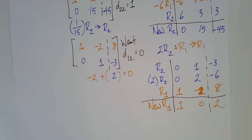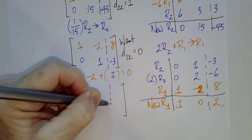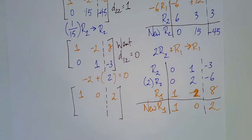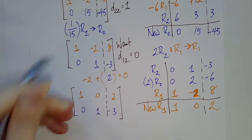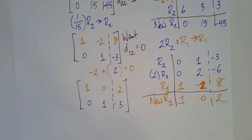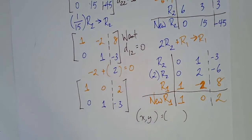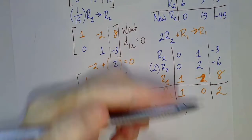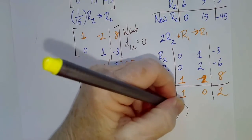And our final matrix is 1, 0, 2, 0, 1, negative 3. That means our solution: we get 2 for x and negative 3 for y.